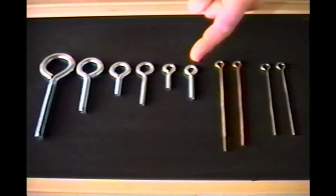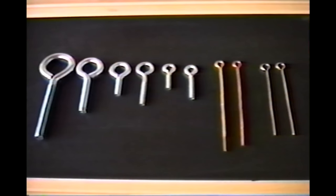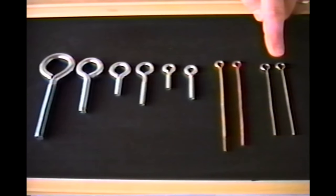These are eye bolts. They're threaded along the bottom and have a loop on the top. These are toilet lift rods and can be found in the plumbing department. These are turkey skewers and can be found in the kitchenwares department.